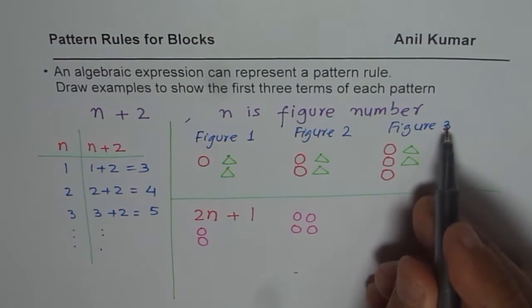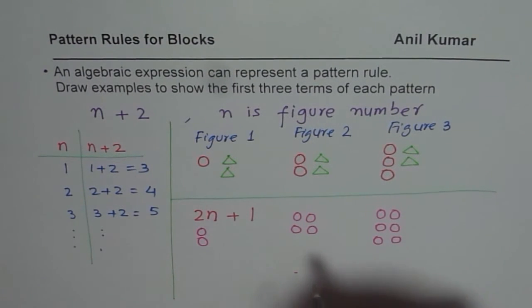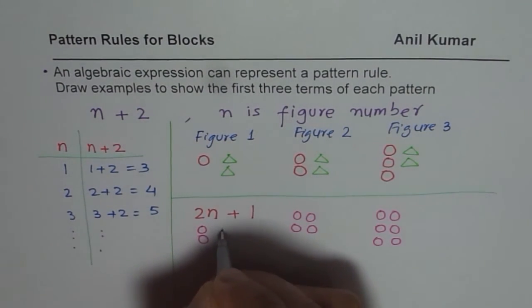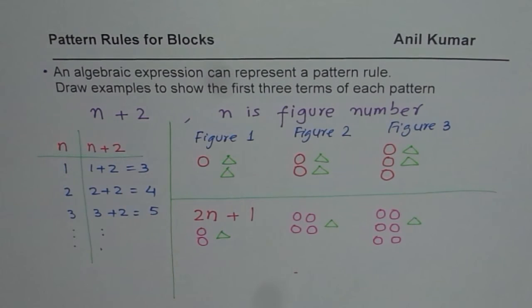And then 3. 2 times 3 is 6. So I will make 6 circles. These are changing for me. And what is fixed? 1 is fixed. I will keep triangles as fixed this time also. So I will keep 1 fixed. So I have 1 triangle, 1 triangle and 1 triangle. Do you see?